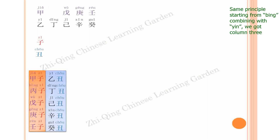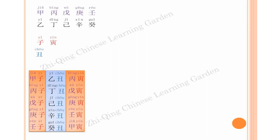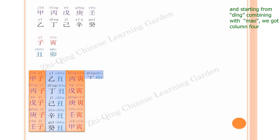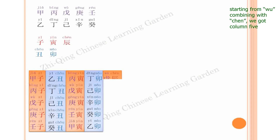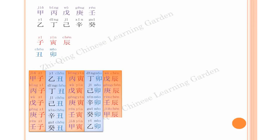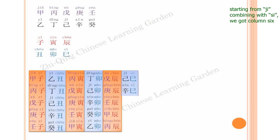By the same principle, starting from bing combining with yin, we get column 3: bing yin, wu yin, geng yin, ren yin, jia yin. Starting ding combining with mao, we get column 4: ding mao, ji mao, xin mao, gui mao, yi mao. Starting wu combining with chen, we get column 5: wu chen, geng chen, ren chen, jia chen, bing chen. Starting ji combining with si, we get column 6: ji si, xin si, gui si, yi si, ding si.